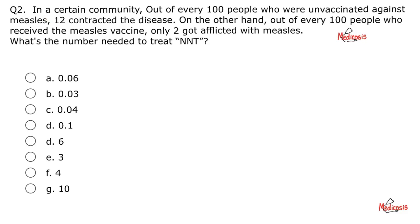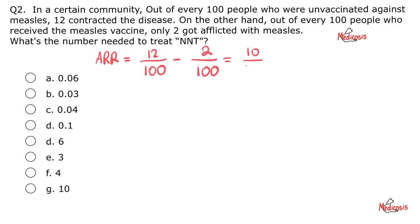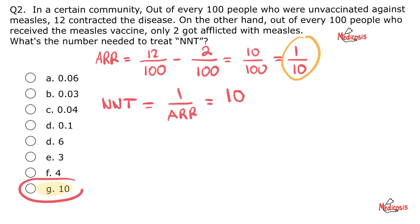Case number two — please pause. First find the absolute risk reduction, then flip it to get the number needed to treat. Big ratio minus small ratio. Since this is a vaccine — a good exposure — the bigger number will be the people who were not vaccinated: denominator 100 with 12 cases. The people who got vaccinated: denominator 100 with only 2 cases of measles. This gives us 10 out of 100, simplified to 1 in 10. Flip the absolute risk reduction: instead of 1 over 10, it becomes 10 over 1, or simply 10. The correct answer is G.